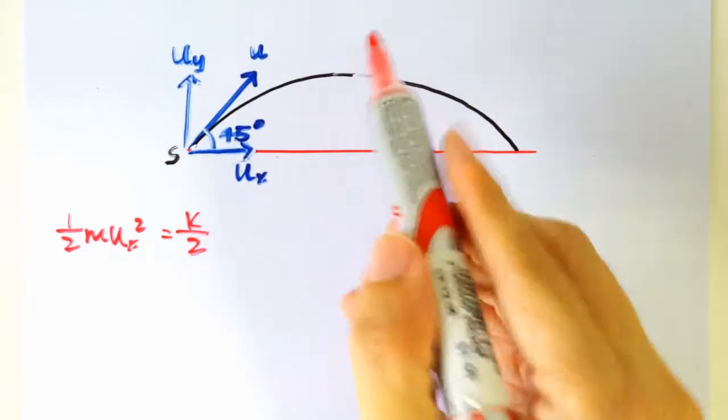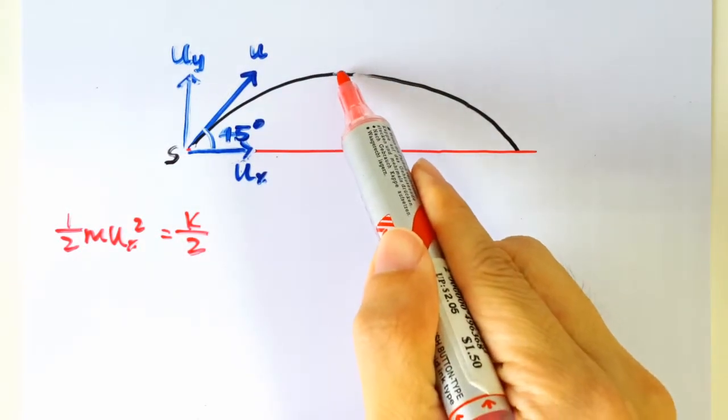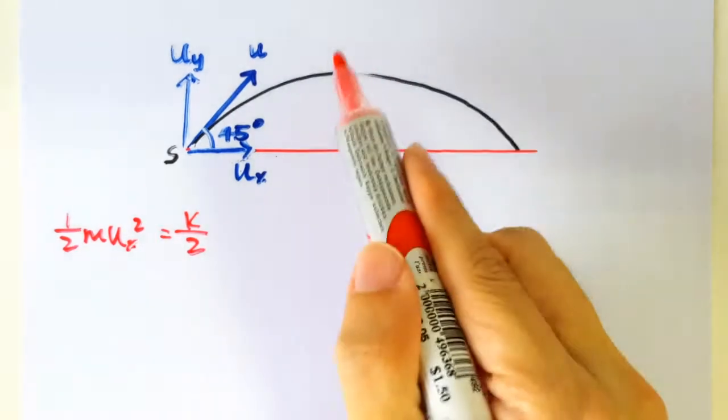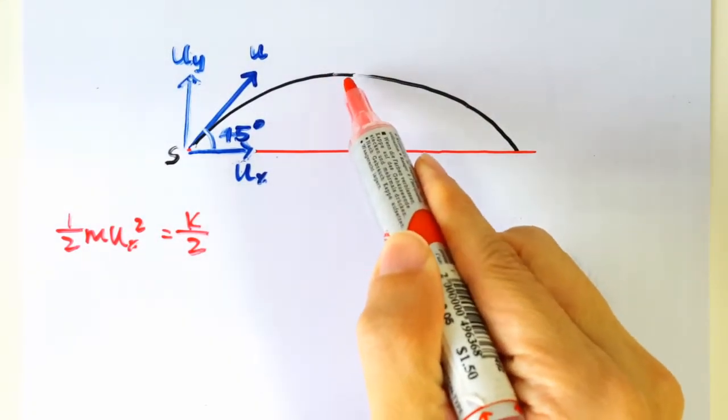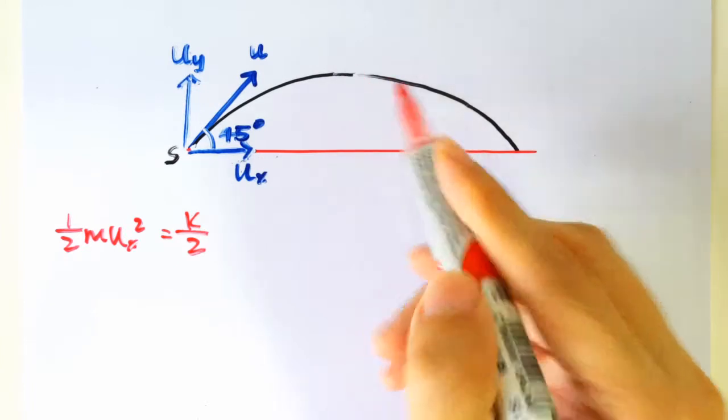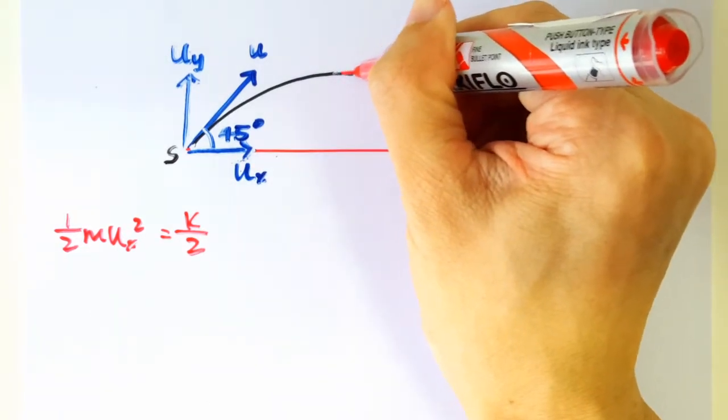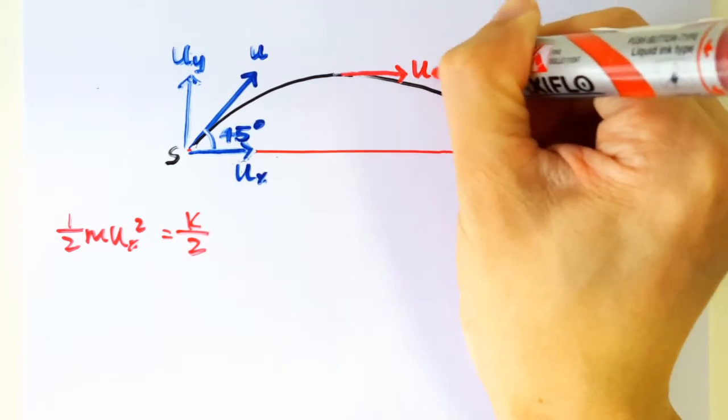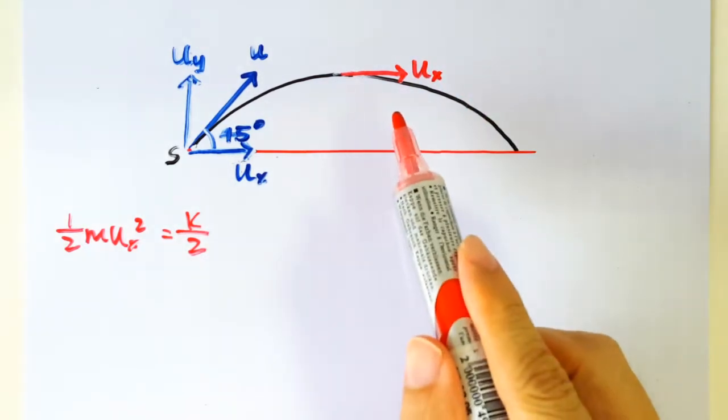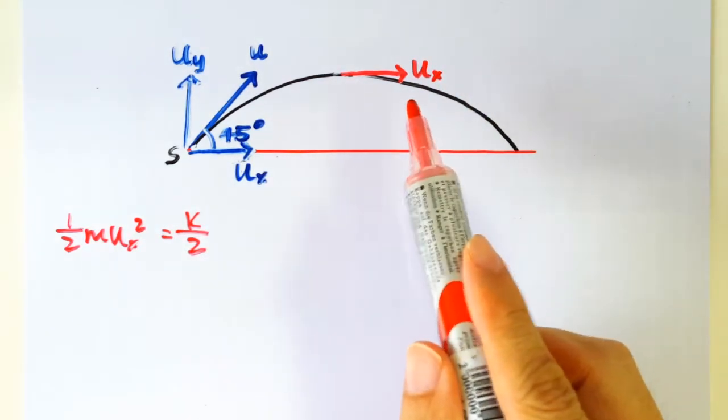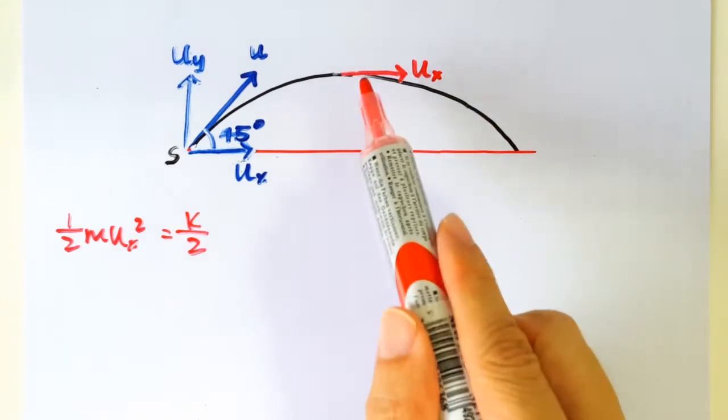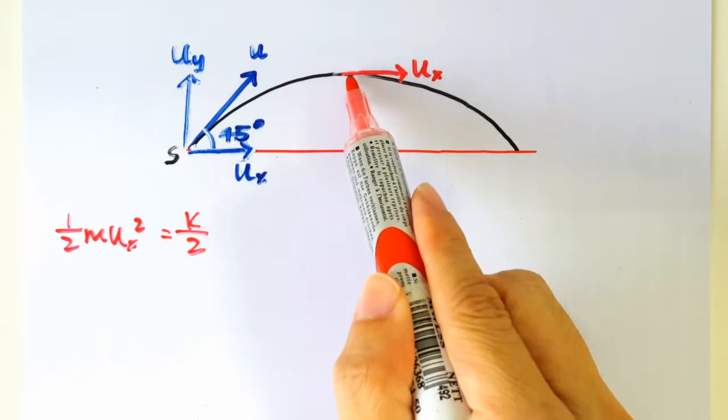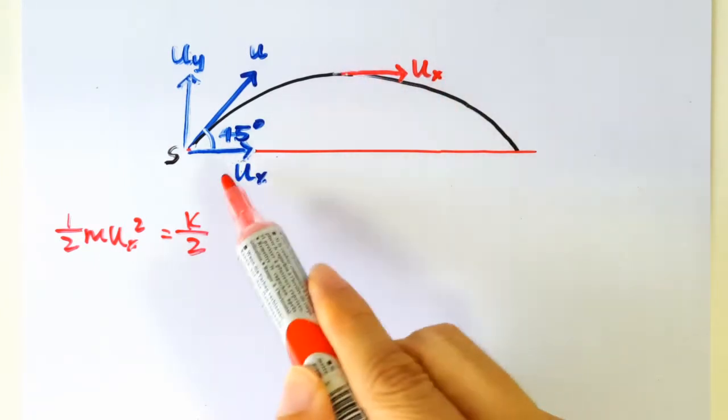So we are asked to derive an expression for the KE and GPE when it's at the peak there. When the projectile is at the peak, does it have any KE? Of course it does, because at the peak, even though you have no vertical component of velocity, you still have the horizontal component of velocity. And because it's a projectile motion, we know that its horizontal velocity remains the same throughout.